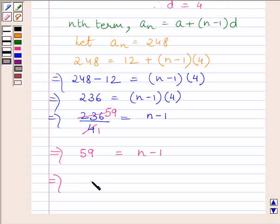Now adding 1 on both the sides we get 60 is equal to N, or we can write N is equal to 60.